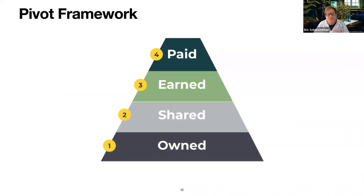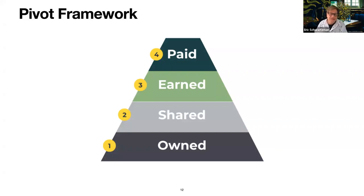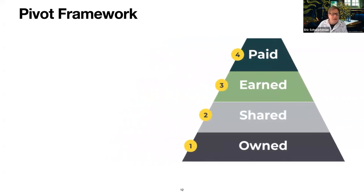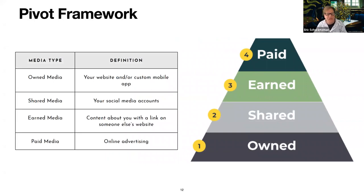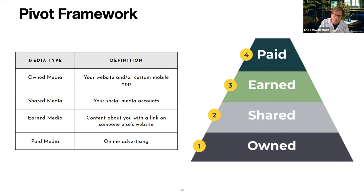Mass media used to be classified by format — print, electronic, cable, terrestrial TV, and radio. But that scheme is not really useful anymore because today newspapers have email newsletters and blogs, print magazines have apps and audio podcasts and live streams, and TV stations have websites and YouTube channels. So now we classify media by type. Here's a cheat sheet: owned media is your website or mobile app — that's the foundation. Next comes shared media, which is your social media footprint. After that is earned media — third-party news media coverage. And paid media is fourth — online advertising.